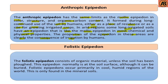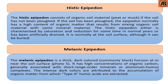The next one is the folistic epipedon. The folistic epipedon consists of organic material. Unless the soil has been drained, this epipedon is normally at the soil surface, although it can be buried. Buried folistic epipedons occur primarily in cold humid regions. This epipedon is only found in mineral soils.